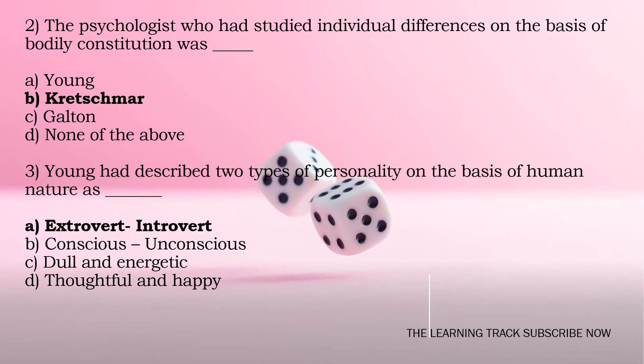Third question: Young had described two types of personality on the basis of human nature as dash. The options are Extrovert and Introvert, Conscious and Unconscious, Dull and Energetic, Thoughtful and Happy. The answer is Extrovert and Introvert — the two types of personality described by Young.